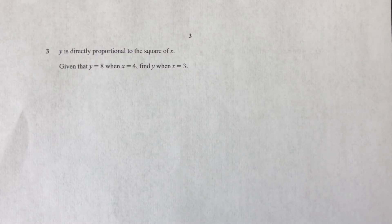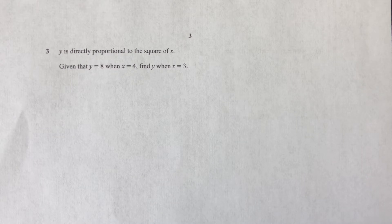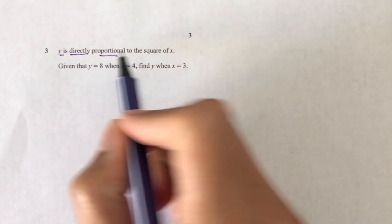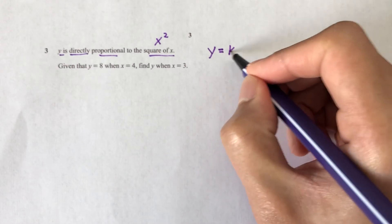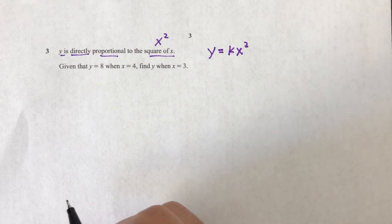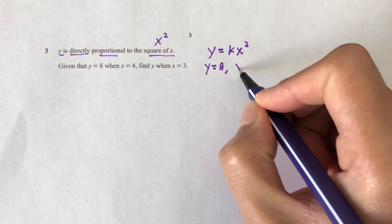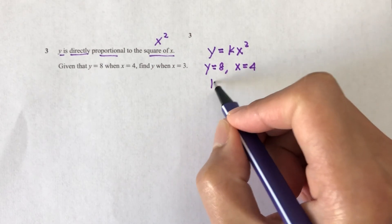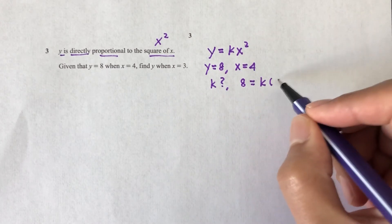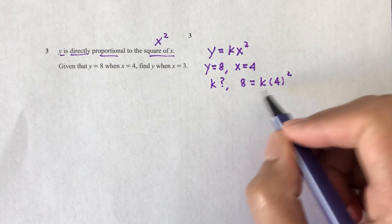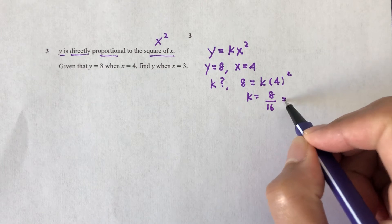Question number 3: y is directly proportional to the square of x. Given that y equals 8 when x equals 4, find y when x equals 3. We use the equation y equals kx squared. Given y equals 8 and x equals 4, we substitute: 8 equals k times 4 squared, so k equals 8 over 16, which is 1 over 2.